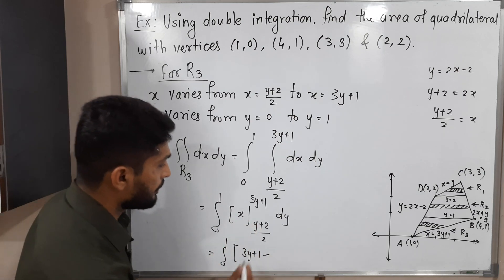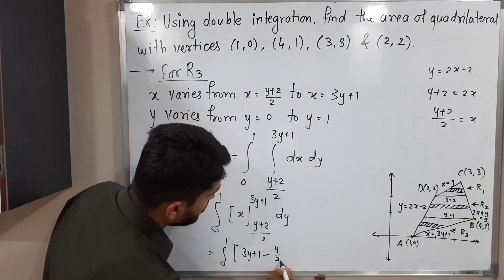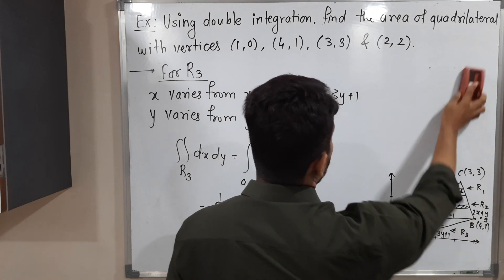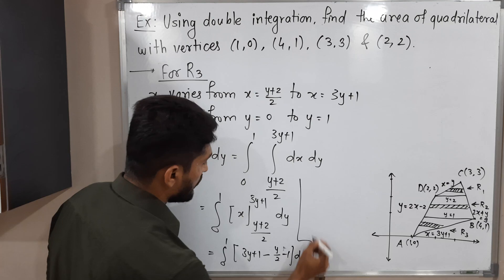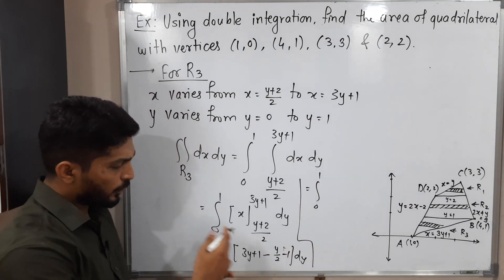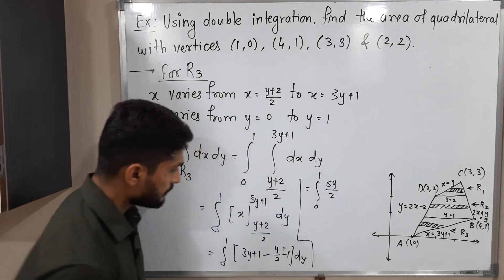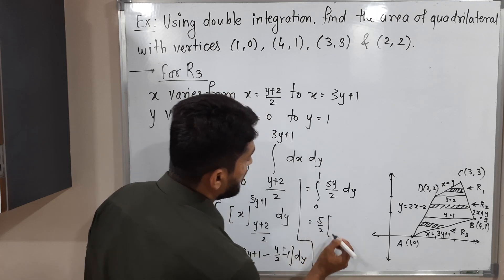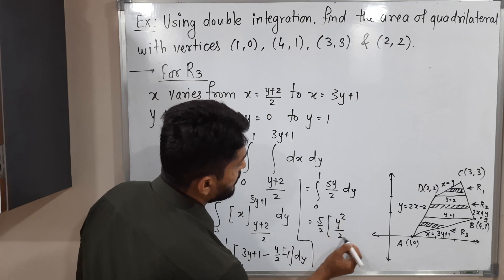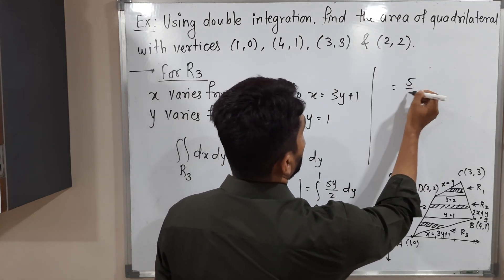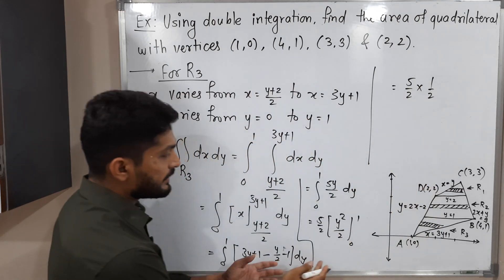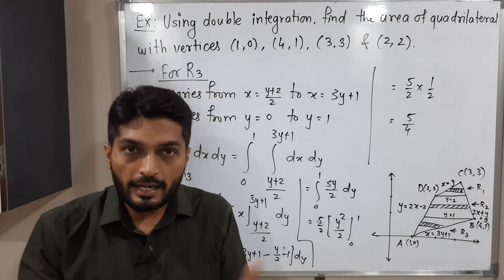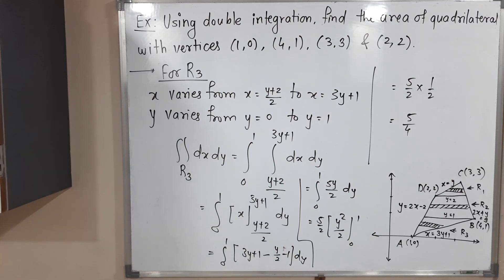Evaluating: ∫₀¹ [3y + 1 − (y + 2)/2] dy = ∫₀¹ (5y/2) dy, since the constants 1 − 1 cancel. This equals (5/2) · [y²/2] from 0 to 1 = (5/2) · (1/2) = 5/4. So the area of R3 is 5/4.